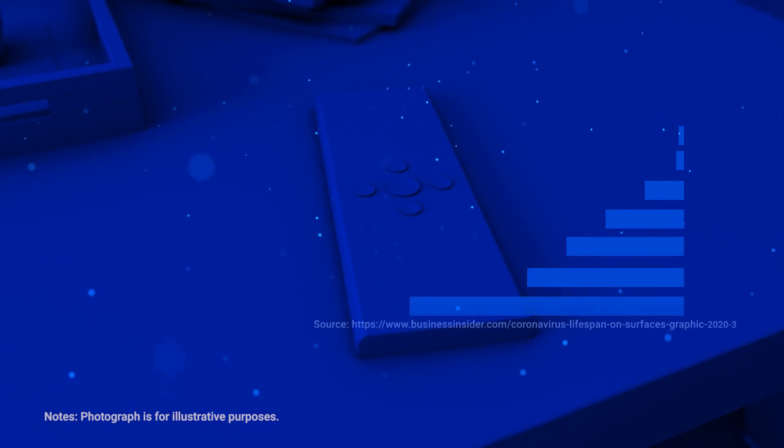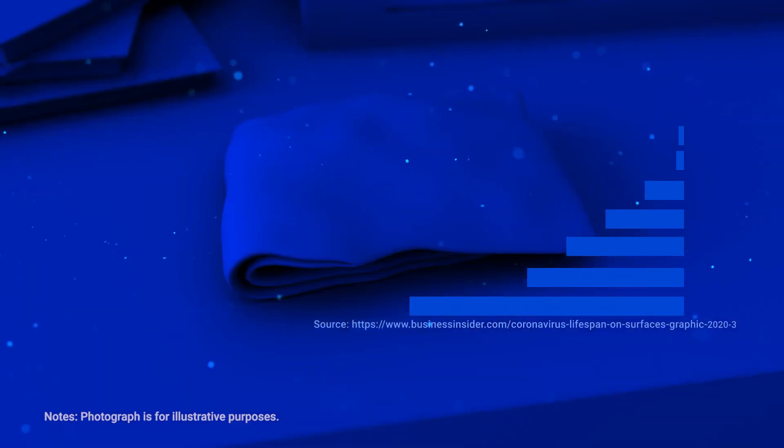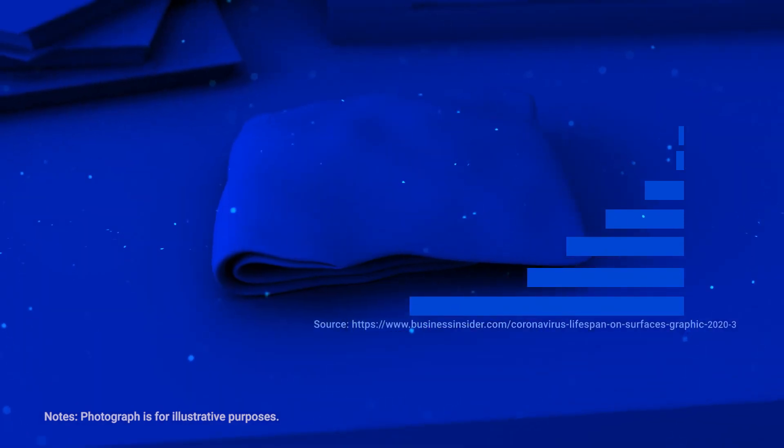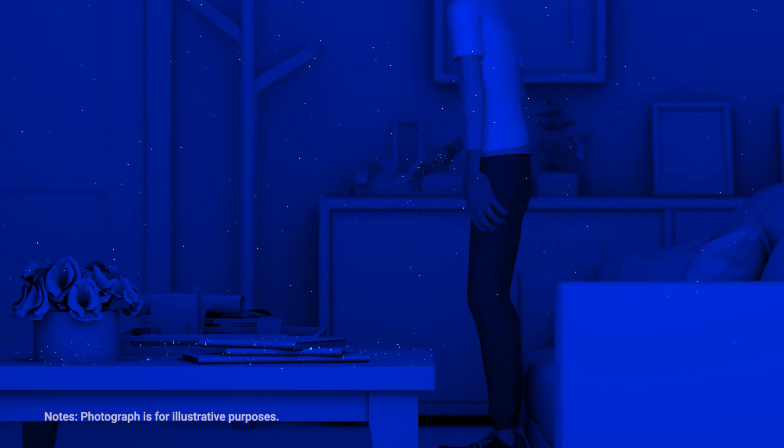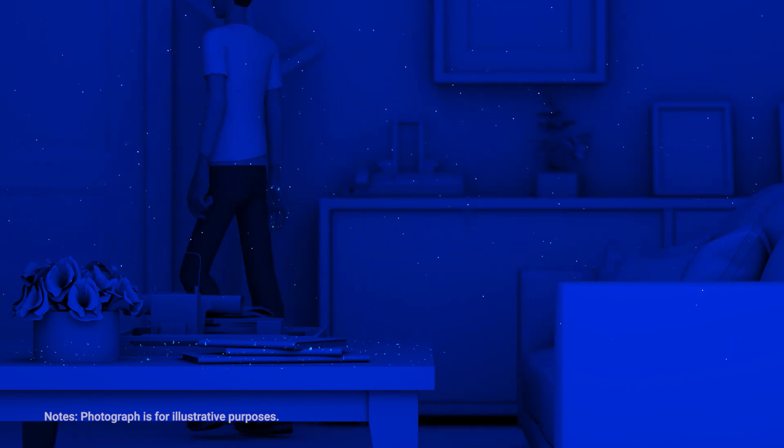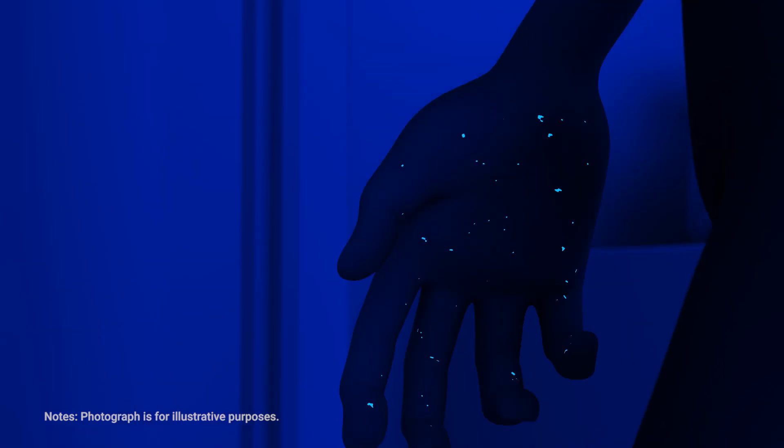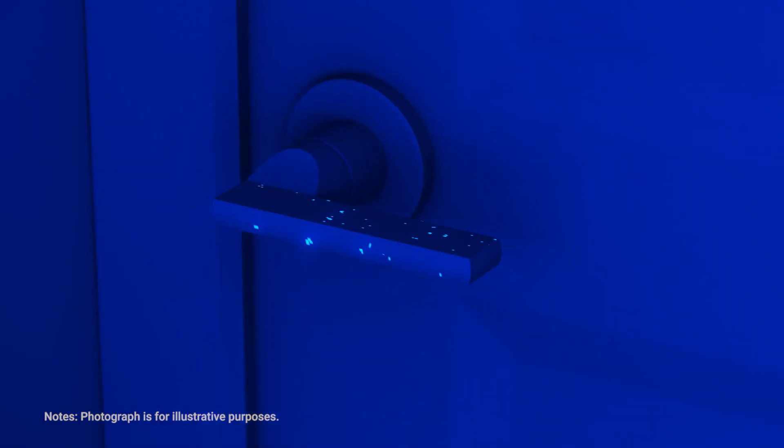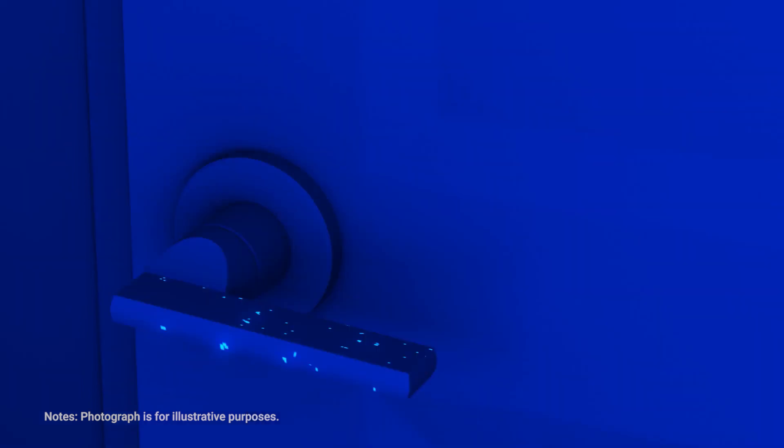The coronavirus can survive on various surfaces for hours to days. When a person touches an object with coronavirus on it, the virus may be transferred to the person. The virus spreads via human activity. This is how outbreaks begin.